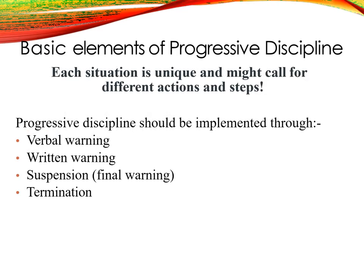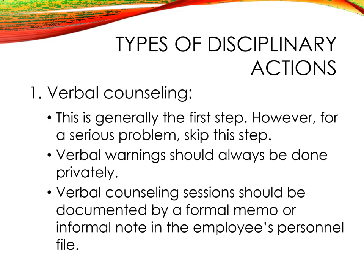There are many systems available for disciplining employees; the most commonly used is progressive discipline, which requires the employer to progress through each step before proceeding to the next. The basic elements of progressive discipline are: verbal warning, written warning, final warning or suspension, and termination. Each situation is unique. Verbal warning is generally the first step, though it can be skipped for serious problems. It should always be done privately and documented by a formal memo or informal note in the employee's personal file or service book.